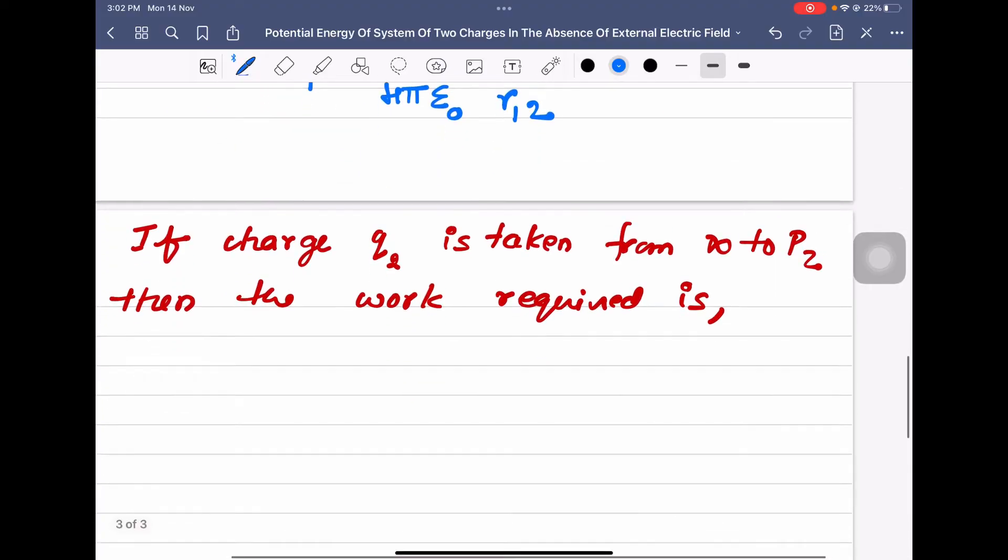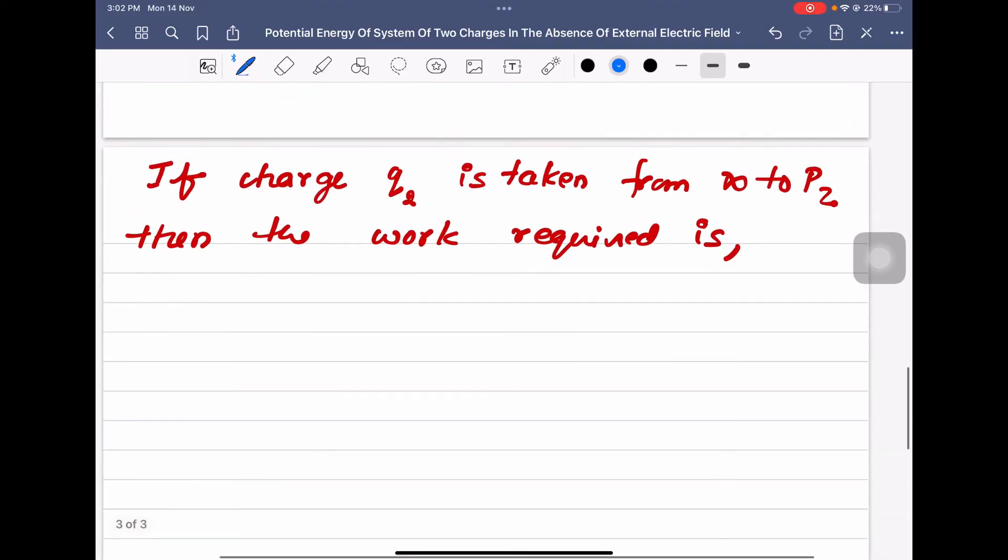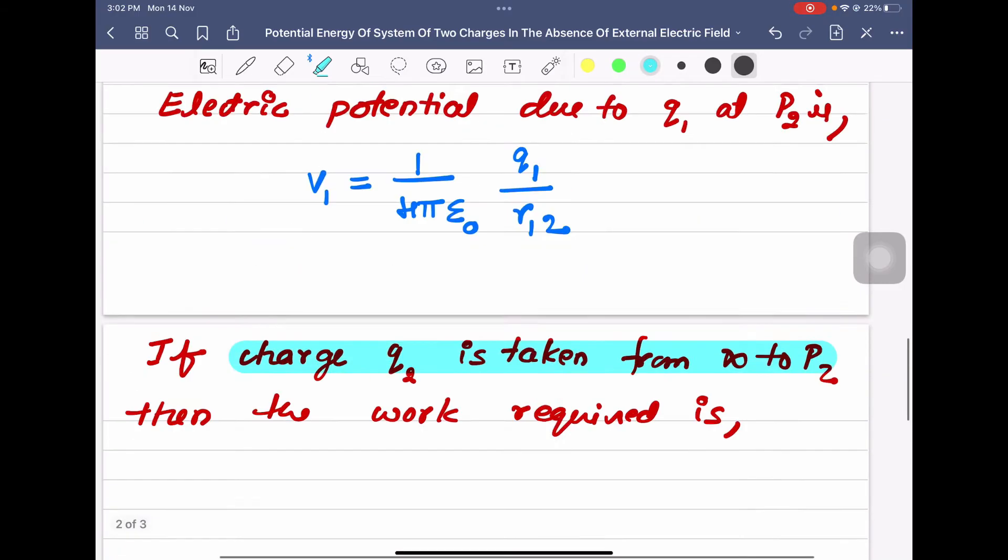Now, what is the work required? We know that work done is equal to charge into potential. If charge Q2 is taken from infinity to P2,